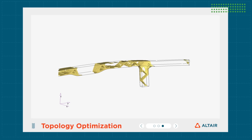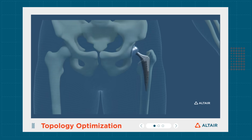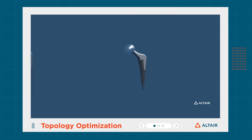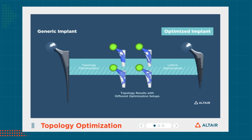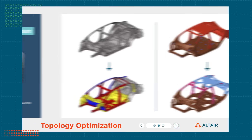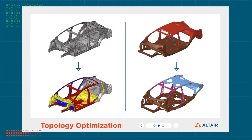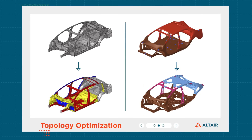Engineers can apply manufacturing constraints at the beginning stages of design, including material, extrusion, symmetry, draw direction, cavity avoidance, and overhead angle. They can define where structure can and cannot be and apply the expected loads that the part will see in use.